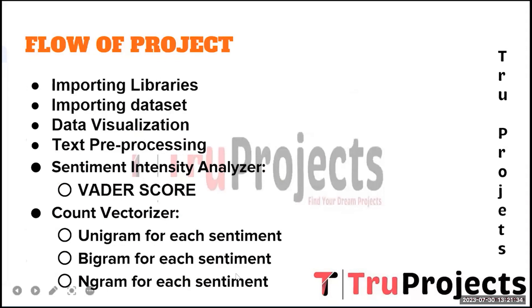The fourth step is text preprocessing. Data preprocessing is crucial for cleaning and preparing the text data for analysis. In this step, we perform tasks such as converting text to lowercase, removing punctuation, eliminating stop words, and applying techniques like tokenization and stemming to standardize the text.